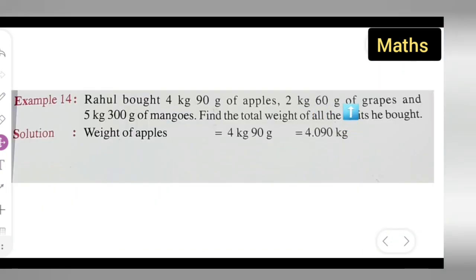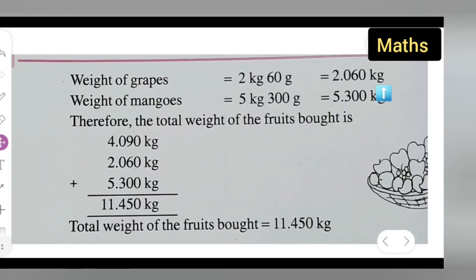Mangoes is 5 kg 300 grams. Weight of the mangoes is 5 kg 300 grams. Convert it to kg, you will get 5.300 kg. Therefore, the total weight of the fruits bought is